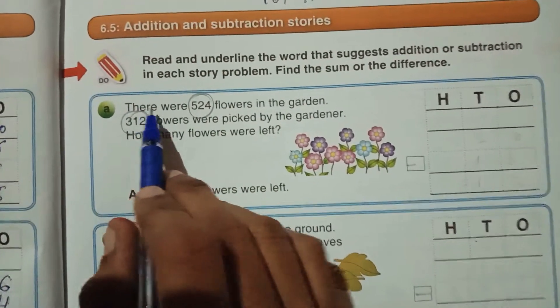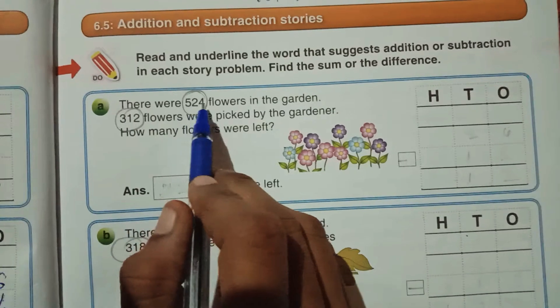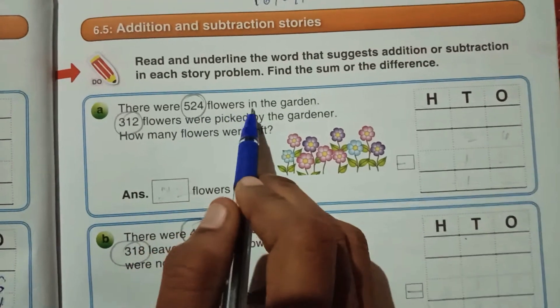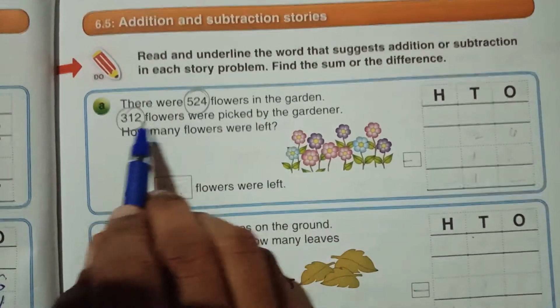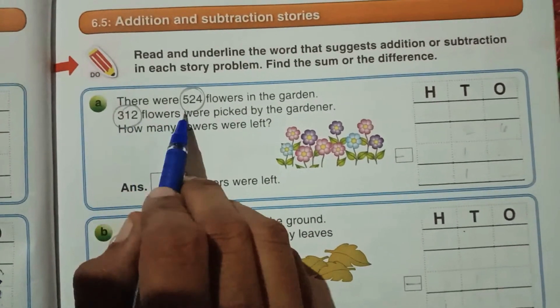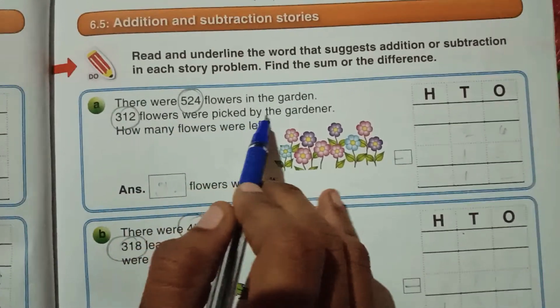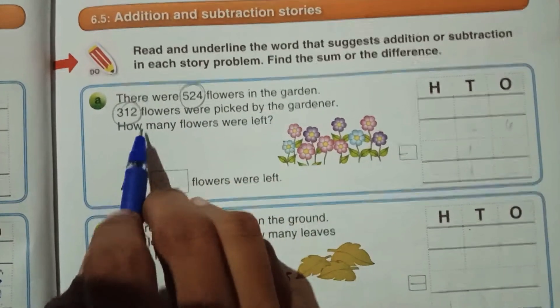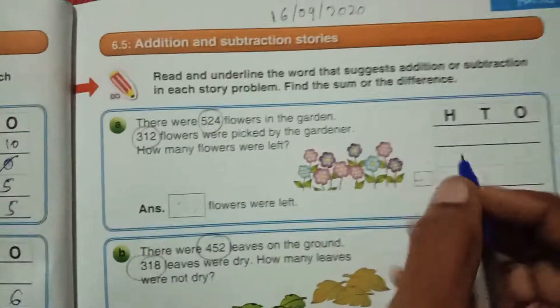First story. There were 524 flowers in the garden. 312 flowers were picked by the gardener. How many flowers were left?